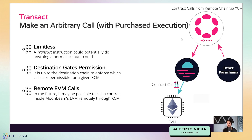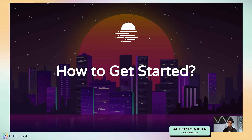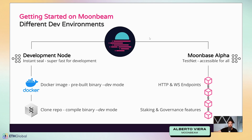How to get started with Moonbeam — you have two ways, plus going directly to production with Moonriver and Moonbeam. You have a development node with instant finality, like Ganache — every time it receives a transaction it creates a block. You can start one with Docker or compile the binary yourself using Rust. I personally recommend the Docker way. The development node has limited features — no XCM because it's a standalone node. On the other hand, Moonbase Alpha is our testnet, accessible to everyone, with HTTP and WebSocket endpoints, staking, governance, and XCM features.